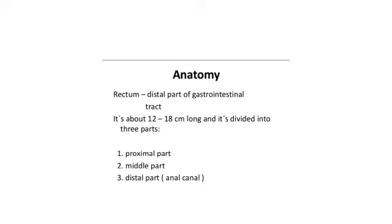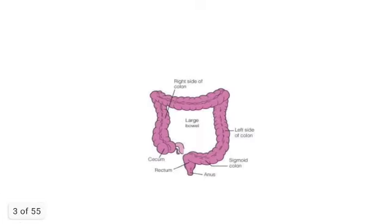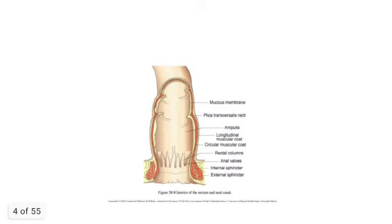The distal part leads to the anal canal. Looking at this photo, we can see from the anus to the rectum, and then the rectum becomes the sigmoid colon proximally. The rectum is covered by a mucous membrane, has the plica transversalis recti muscle, a longitudinal muscular coat, a circular muscular coat, rectal columns, anal valves, and internal and external sphincters.